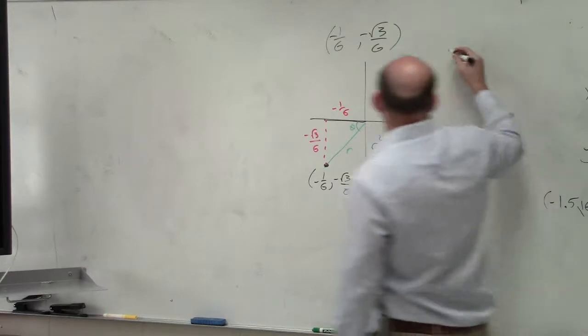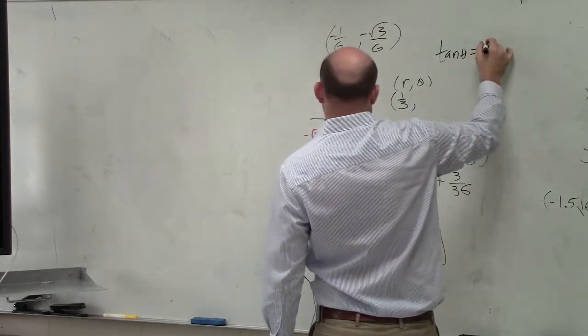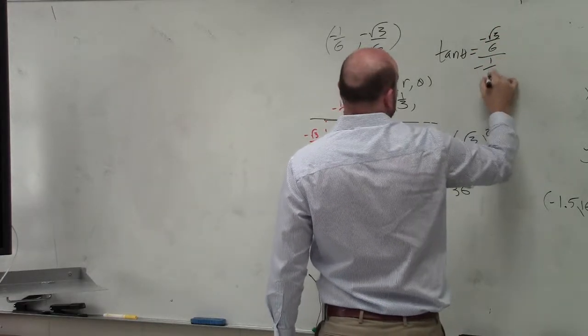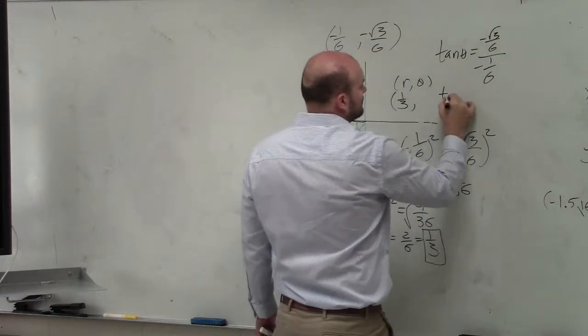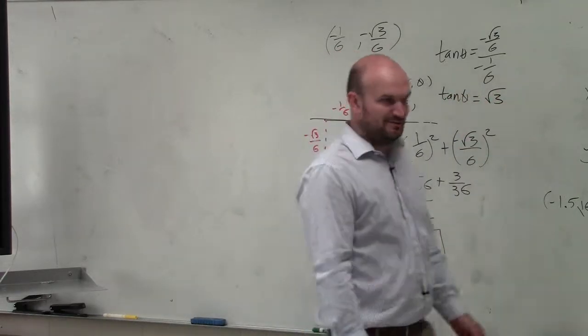Yes. Tangent of theta is equal to opposite negative square root of 3 over 6, divided by negative 1 over 6. Now, I will give you guys a hint. Tangent of theta equals the square root of 3.